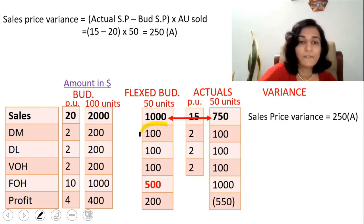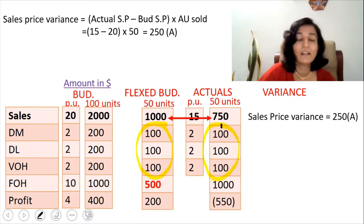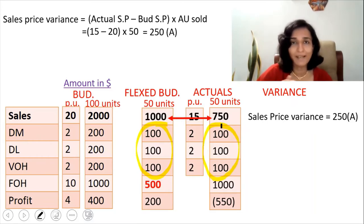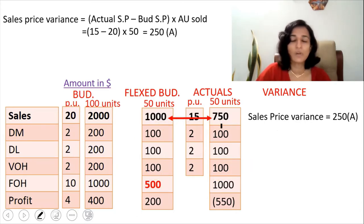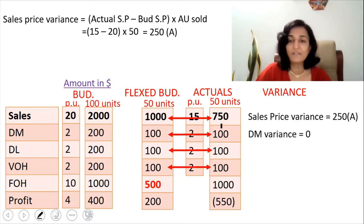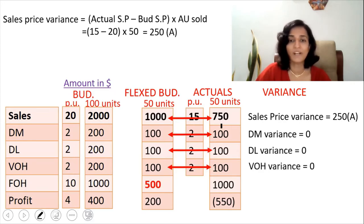We have safely assumed that the variances for direct material, direct labor, and variable overheads are zero, just to keep the question simple. So direct material variance is 0, direct labor variance is 0, and variable overhead variance is also 0.